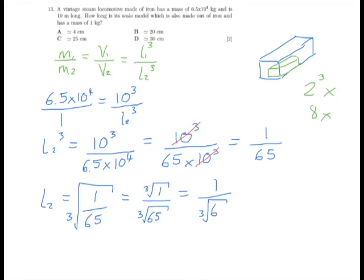We don't know the cube root of 65, that's not the sort of thing we have in our heads, but we do know the cube root of 64, which is 4 times 4 times 4. So we can say that's approximately equal to the cube root of 64, which will give us an answer then that is 1 divided by 4, or 0.25 meters, which matches our answer C here of 25 centimeters.